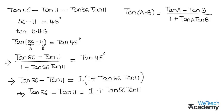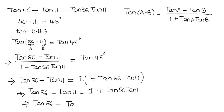We need to find the value of tan 56 degrees minus tan 11 degrees minus tan 56 degrees into tan 11 degrees. To do so, transfer tan 56 degrees into tan 11 degrees from the RHS to the LHS. By transferring we get tan 56 degrees minus tan 11 degrees minus tan 56 degrees into tan 11 degrees, which is equal to 1.